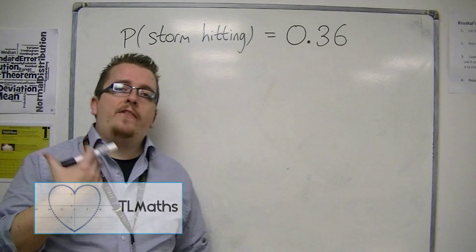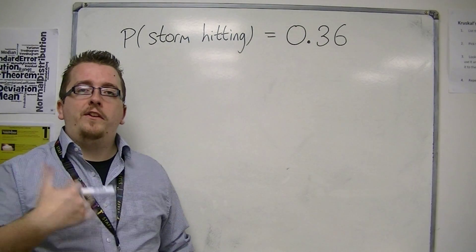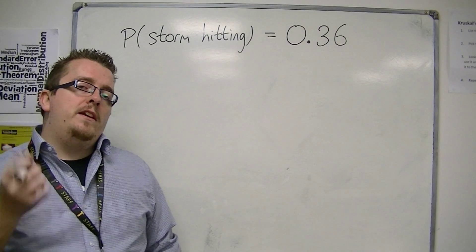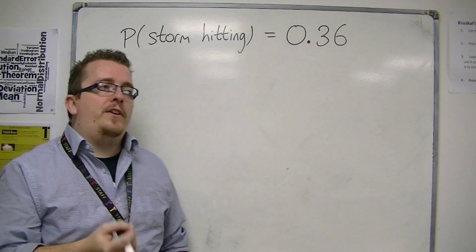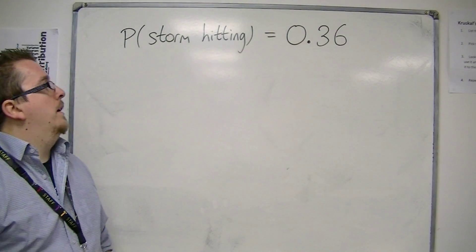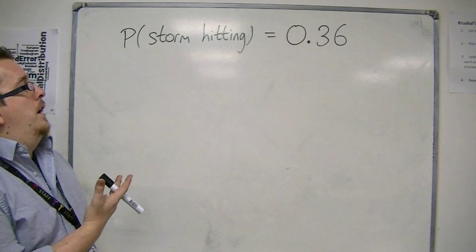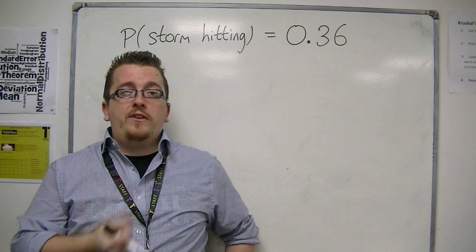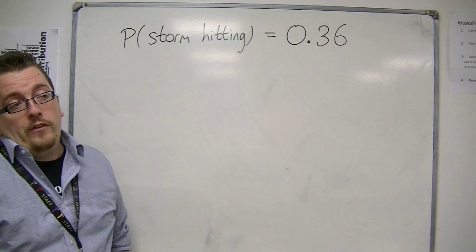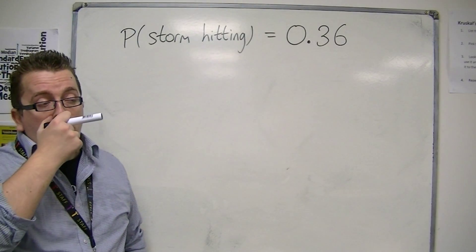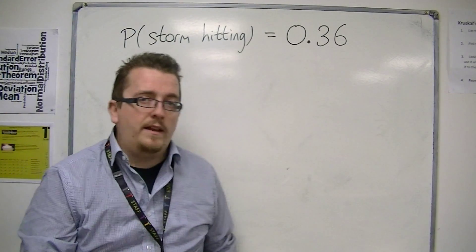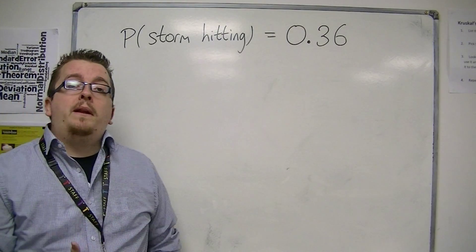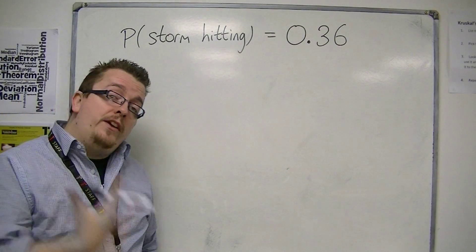In this video we're going to be looking at the probability that events don't happen. So let's say the probability of a storm hitting the UK has a probability of 0.36. This is a probability that has just been calculated. So then what is the probability that it doesn't hit?